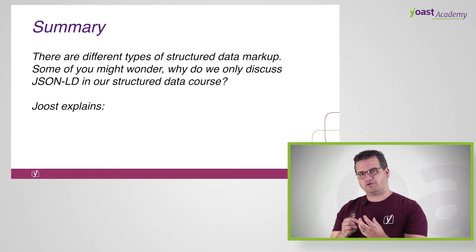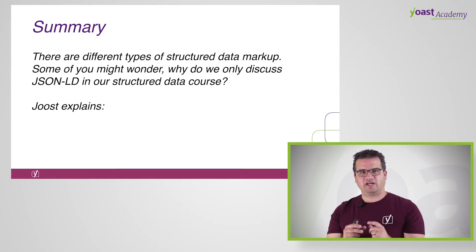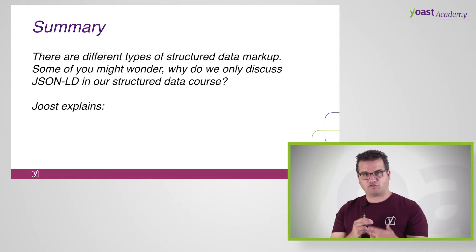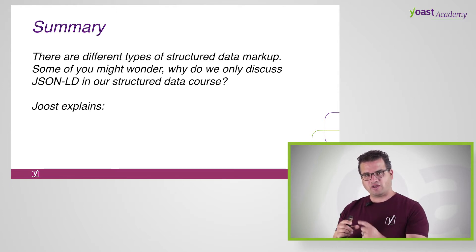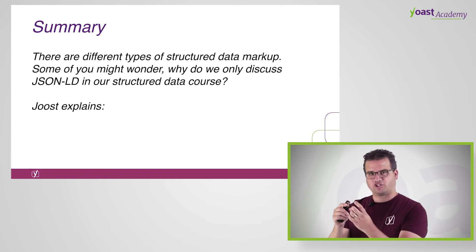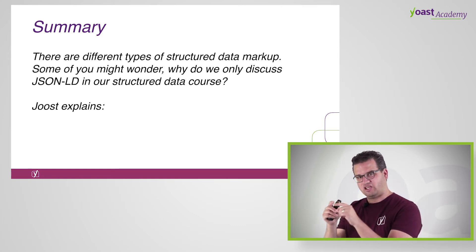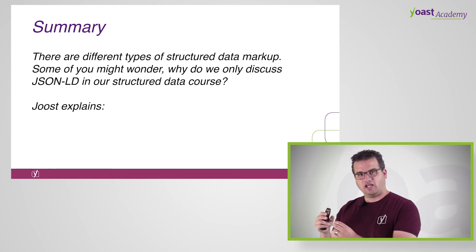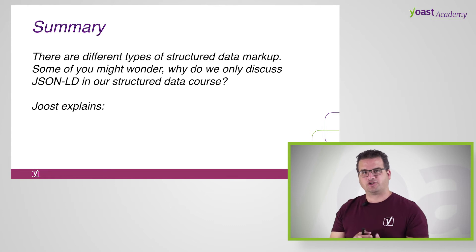JSON-LD is a method where you actually put that data on the page twice. You have it on the page for visitors, for normal people, and you have a script tag — a script tag that has JSON-LD as a type — in which you put all that information again in a structured form so that search engines can read it.